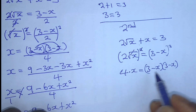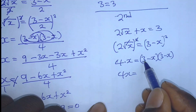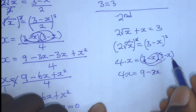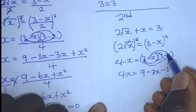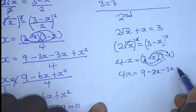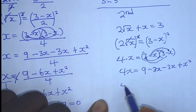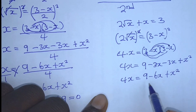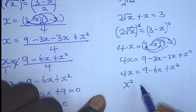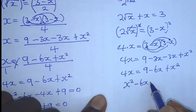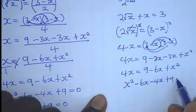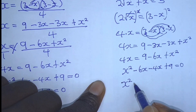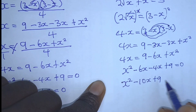We can expand the right-hand side: 4x is equal to 3 times 3 giving 9; 3 times minus x giving minus 3x; minus x times 3 giving minus 3x; and minus x times minus x giving plus x squared. So, 4x is equal to 9 minus 6x plus x squared. Collecting the like terms: x squared minus 6x minus 4x plus 9 equals 0, which gives x squared minus 10x plus 9 equals 0.